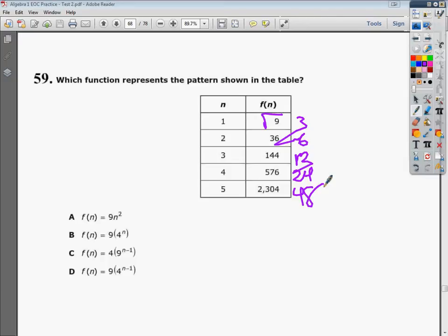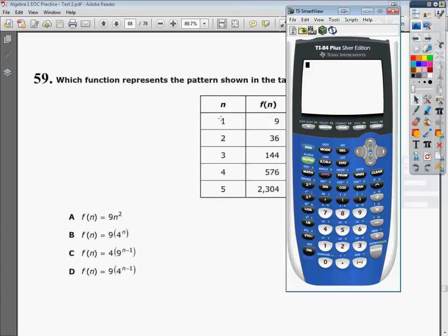In actuality, it's much easier just to plug in your n values and see if you get f of n. That would be very helpful. So what I'm going to do instead is just plug things into the calculator and see if I can get the results that I expect to get. For instance, when I plug in the first one, I should expect to get 9.